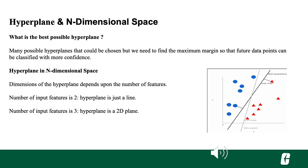The dimension of the hyperplane depends on the number of features. If the number of input features is 2, the hyperplane is just a line. If the number of input features is 3, the hyperplane is a 2D plane.